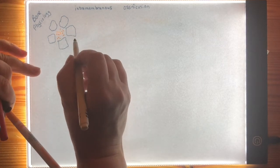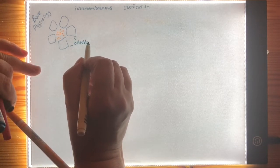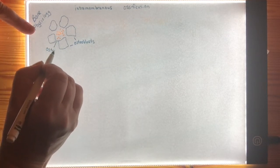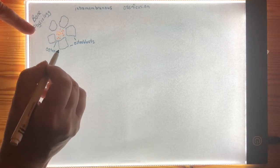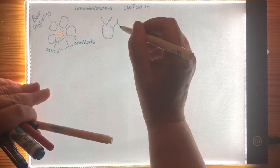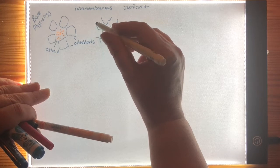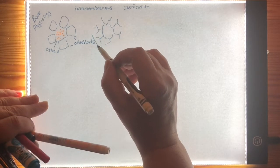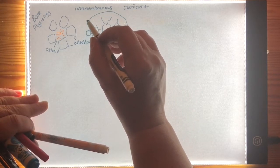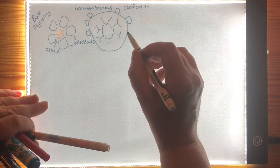The bones involved in intramembranous ossification include the bones of the skull, the bones of the cranium, the mandible, and the clavicle. As you can see, we begin with osteoblasts secreting osteoid — the collagen and ground substance discussed in the last video. Eventually, the osteoblasts secrete so much osteoid that they bury themselves inside of it, creating a much more developed cell called an osteocyte.